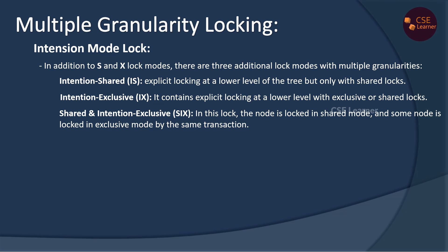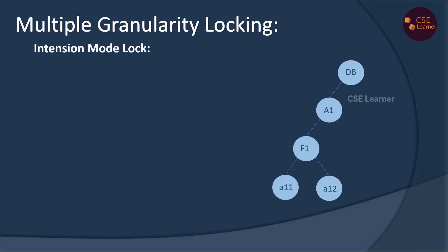Now let's do an example. In this example, there is a database. A1 is an area. F1 is a file with two data items: Attribute A11 and Attribute A12. T1 is a transaction that accesses attribute A11 with a Shared Lock. That is a parent node — F1 gets an Intention Shared lock. F1's parent A1 also gets an Intention Shared lock. The database also gets an Intention Shared lock.